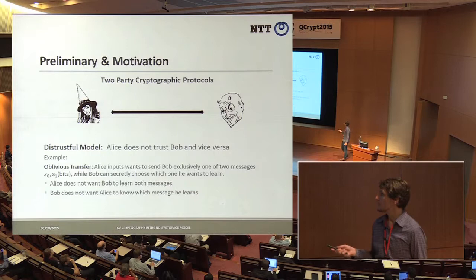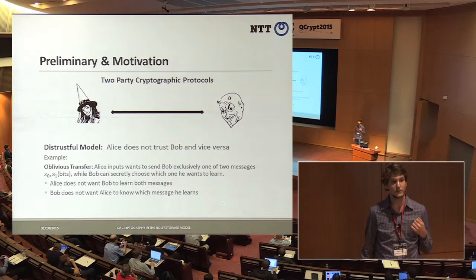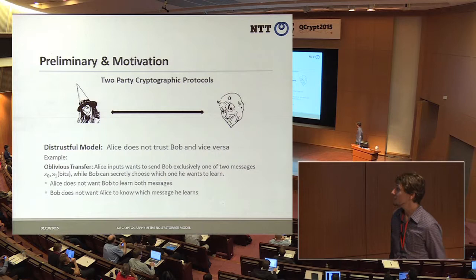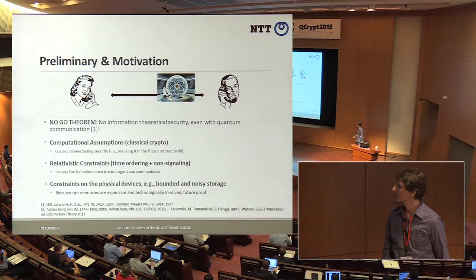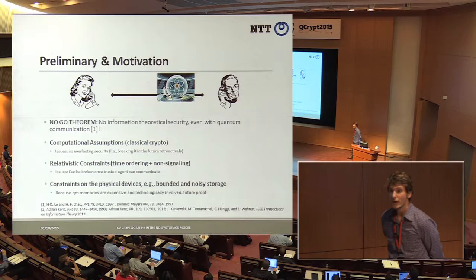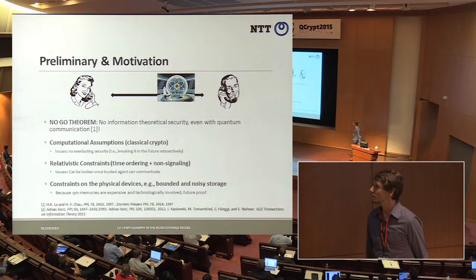However, these parties don't trust each other. This means, for oblivious transfer, Alice doesn't want Bob to actually learn both of the messages, and Bob doesn't want Alice to know which message he learned. However, there are no-go theorems. It's long known that this is not possible even though Alice and Bob can do some quantum communication.